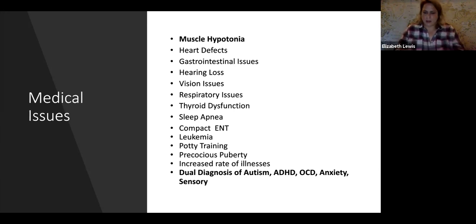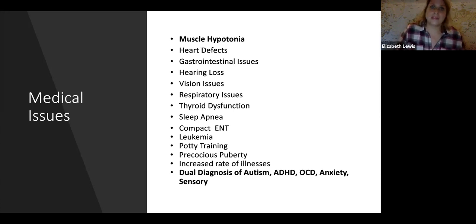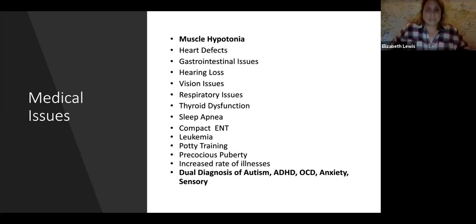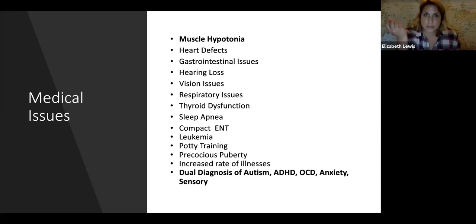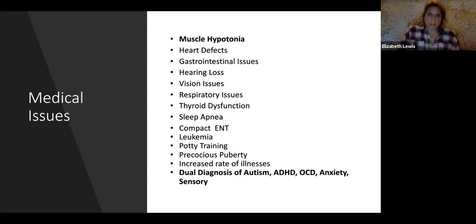People with Down syndrome have to work two or three times harder than typically developing people to do the same things. If you've seen a student leaning over or laying their head down, it's because those core muscles are loose and stretchy. Difficulty writing and frustration when trying to write letters or a sentence — that's loose and stretchy muscles too. That's why muscle hypotonia is so important to keep in mind. It can make a big impact on a student's ability to participate meaningfully. We want to accommodate that student coming from a place of empathy.